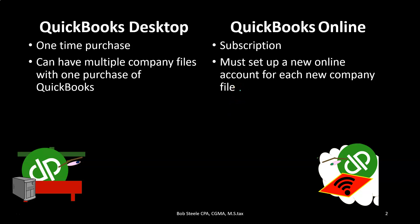The online version is a little different — you set up basically another account for each company file, so every time you set up another account you set up the company file and go through the process each time. For practice problems, the desktop version works really well. When we do practice for either version, we can utilize the 30-day free trial, which gives us a clean company file. With the desktop version, you can set up a clean company file without affecting anything in your current company file as you practice.